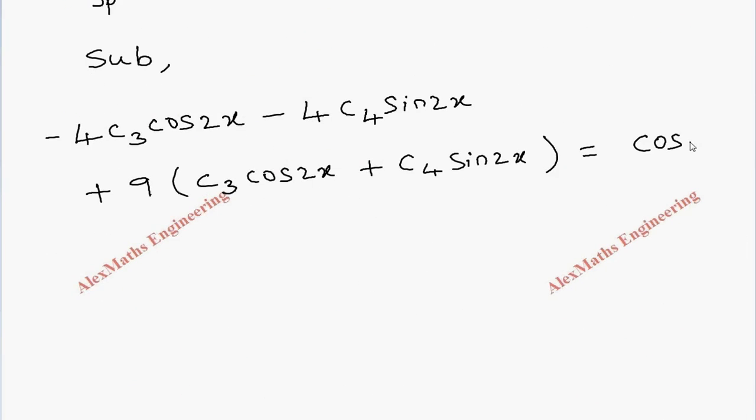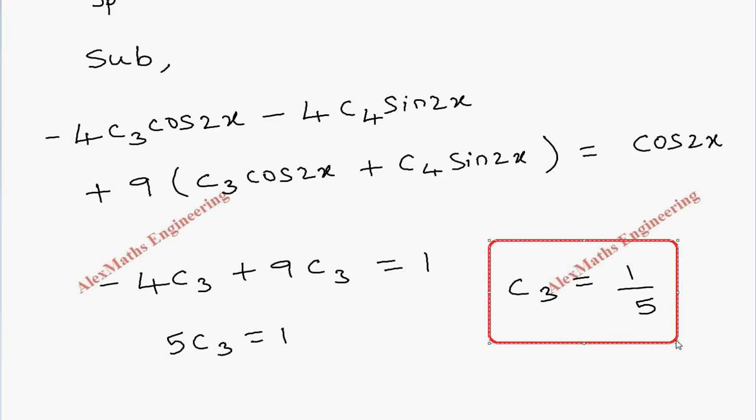Now we are going to compare the coefficients of cos 2x on both sides. So minus 4c3 plus 9c3 equals 1 because cos 2x has coefficient 1 on the other side. From this we get 5c3 equals 1, and from this c3 is 1 by 5. So we got the value of the constant c3 as 1 by 5.